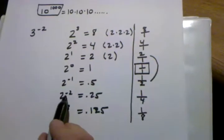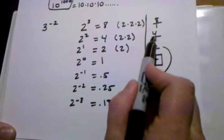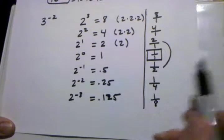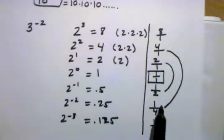So 2 to the negative 2nd power, well, I know that 2 to the 2nd power is 4, so it's 4 over 1 in fraction form. Now, if I want to put it in reciprocal form, I'll end up with 1 fourth.